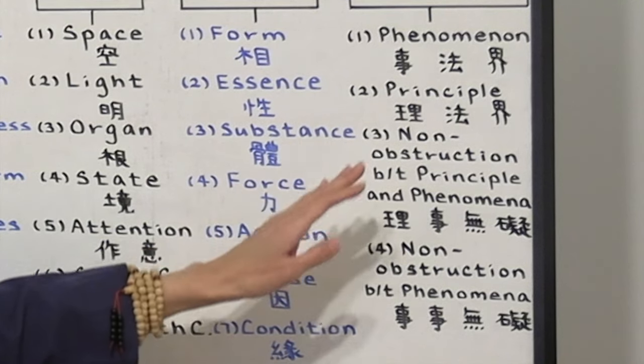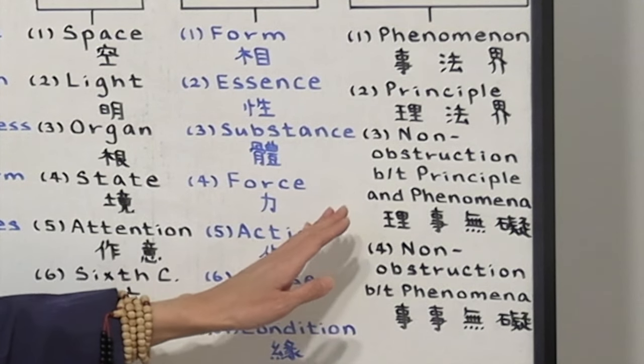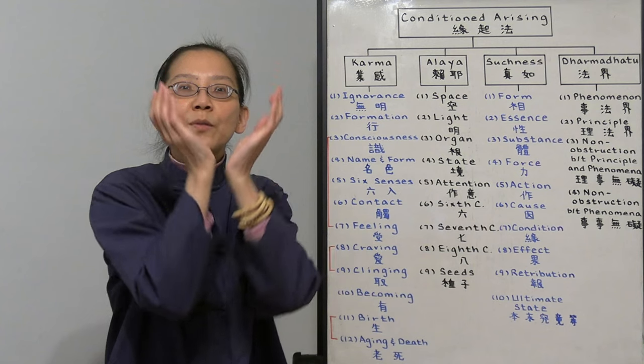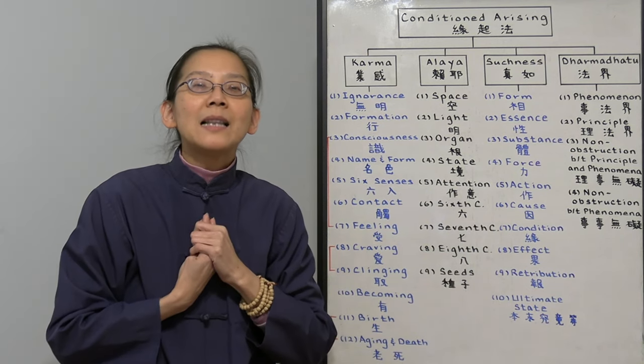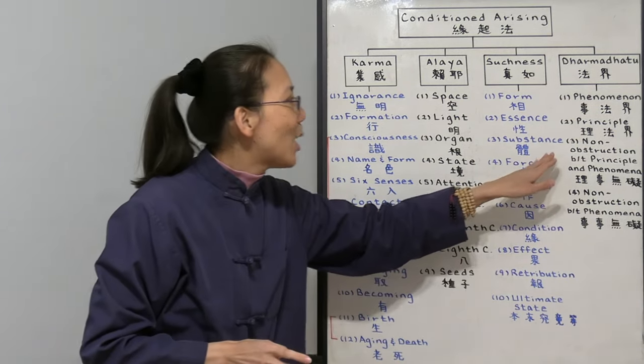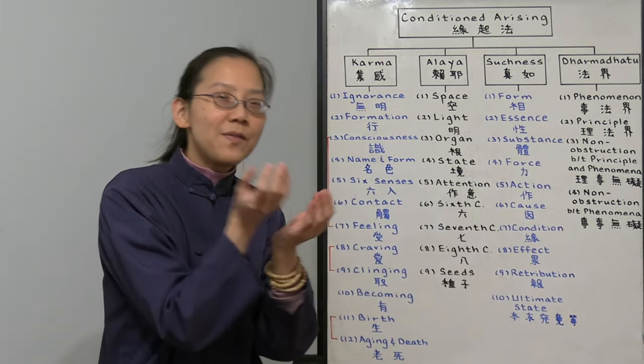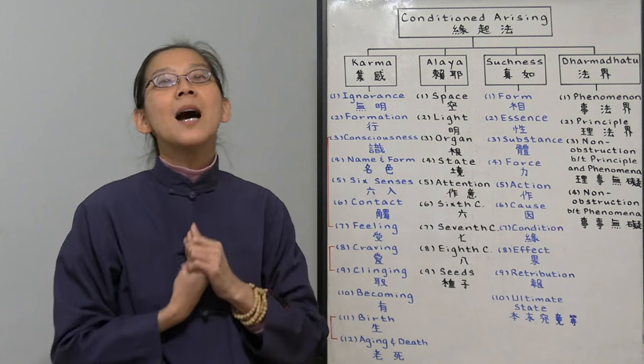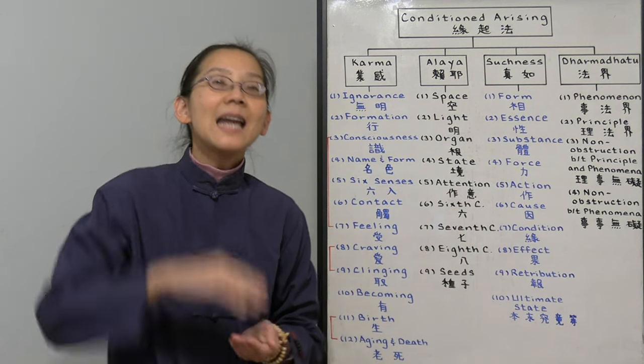Number three is the non-obstruction between principle and phenomenon. This beautiful cake symbolizes my love. And my love is in this cake. Then there is no obstruction between the physical thing and my heart. So that's the higher wisdom.